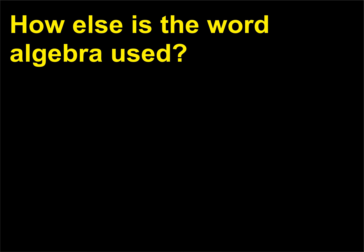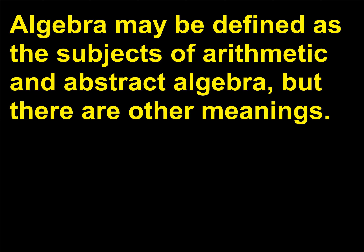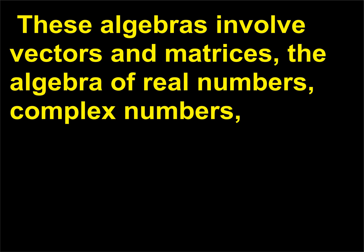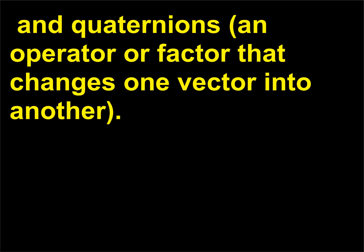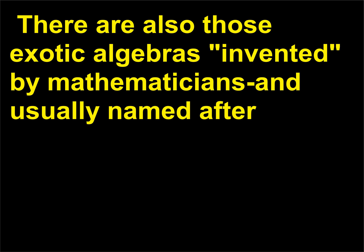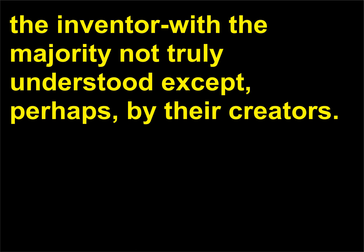How else is the word algebra used? Algebra may be defined as the subjects of arithmetic and abstract algebra, but there are other meanings. These algebras involve vectors and matrices, the algebra of real numbers, complex numbers, and quaternions — an operator or factor that changes one vector into another. There are also those exotic algebras invented by mathematicians and usually named after the inventor, with the majority not truly understood except, perhaps, by their creators.